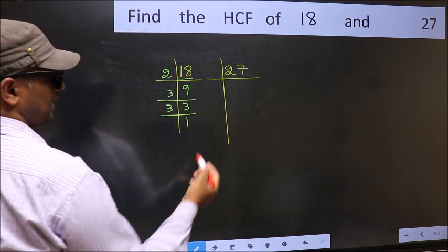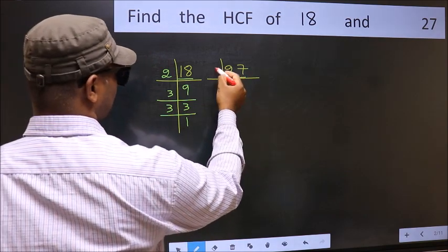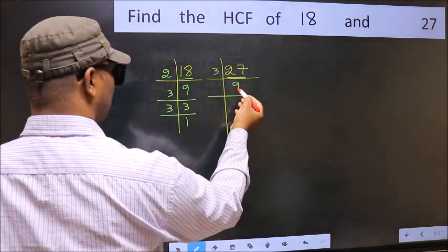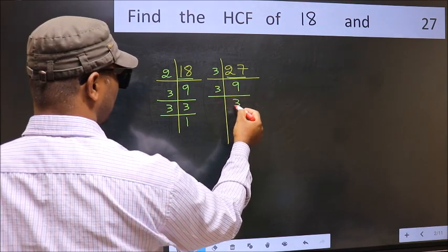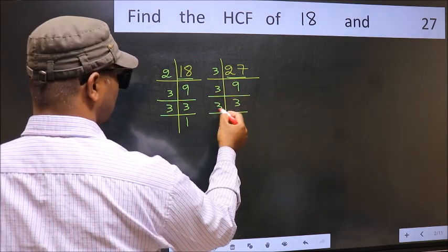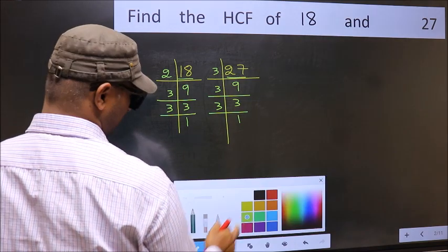Now the other number, 27. 27 is 3 times 9. 9 is 3 times 3. 3 is a prime number, so 3 times 1. Therefore,